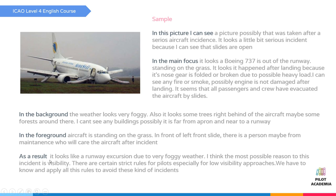As a result, it looks like a runway excursion due to very foggy weather. The most possible reason for this incident is visibility. There are certain strict rules for pilots, especially for low visibility approaches — we have to know and apply all these rules to avoid this kind of incident. We described the whole picture using this technique, and if you apply this in the real exam, I believe it will help you very much.